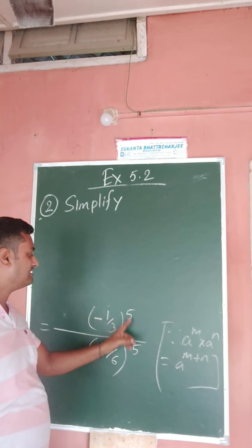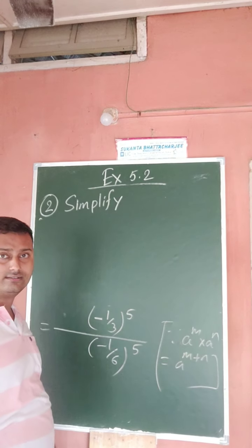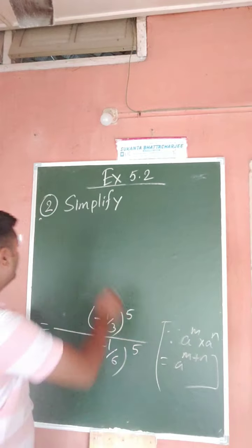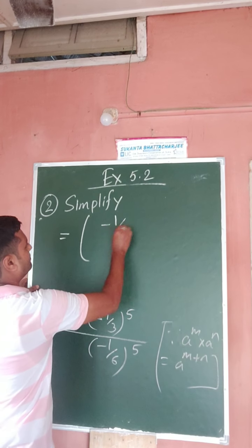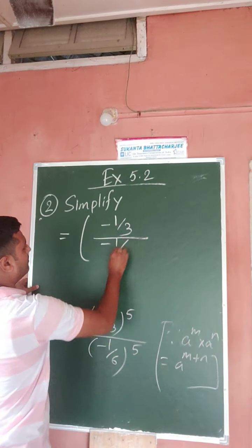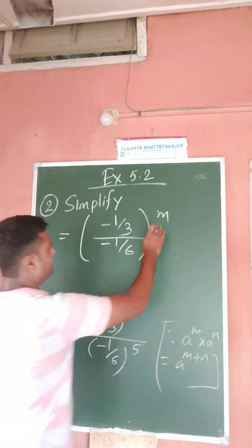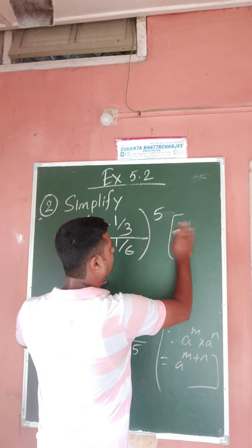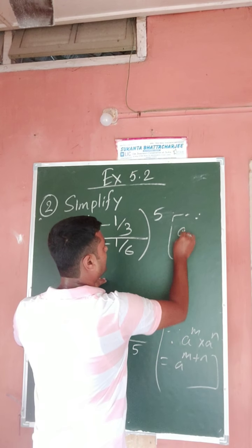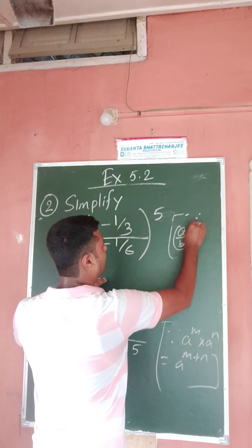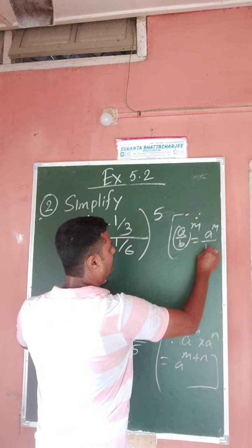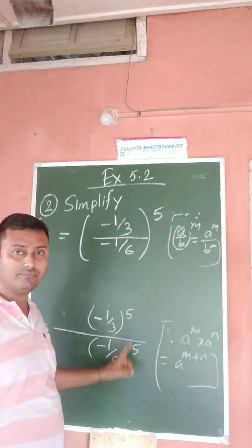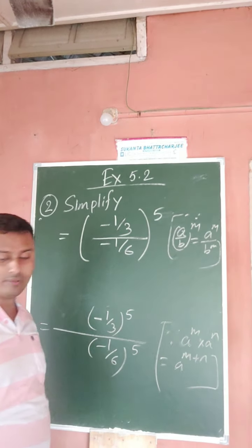In this case, powers are equal but bases are different. That means we apply: a to the power m divided by b to the power m equals a by b whole to the power m. Here the right-hand side is given — a to the power m divided by b to the power m — so the left-hand side becomes a by b whole to the power m, where m is 5.